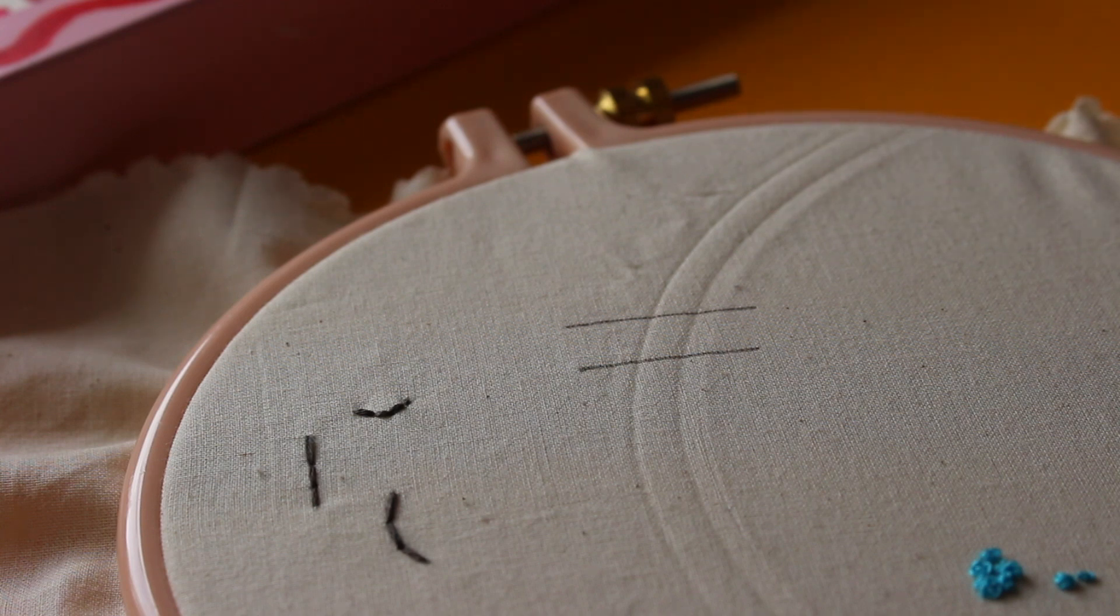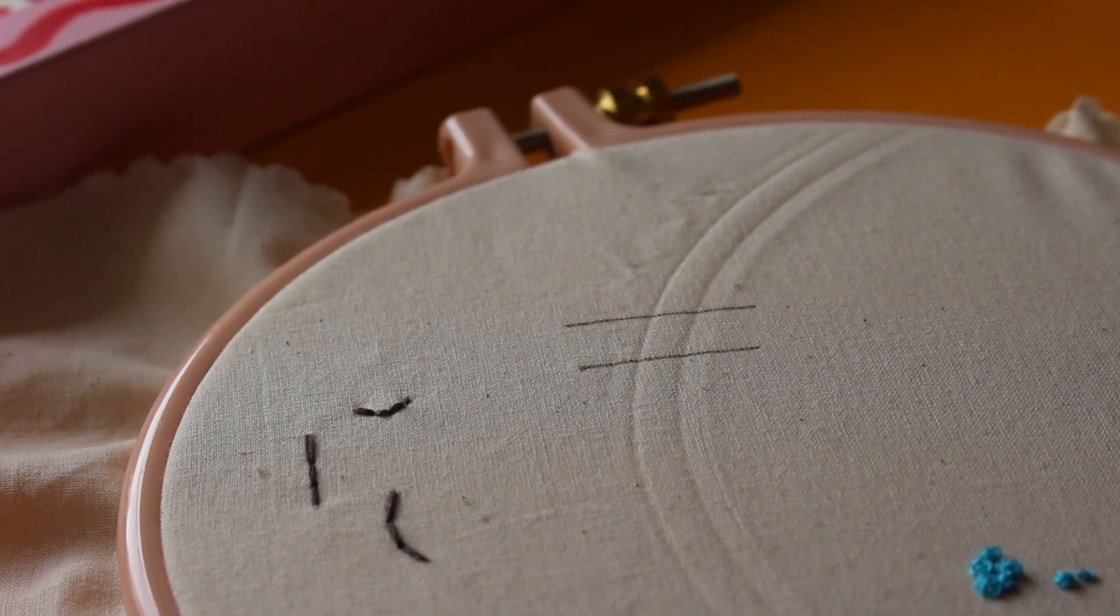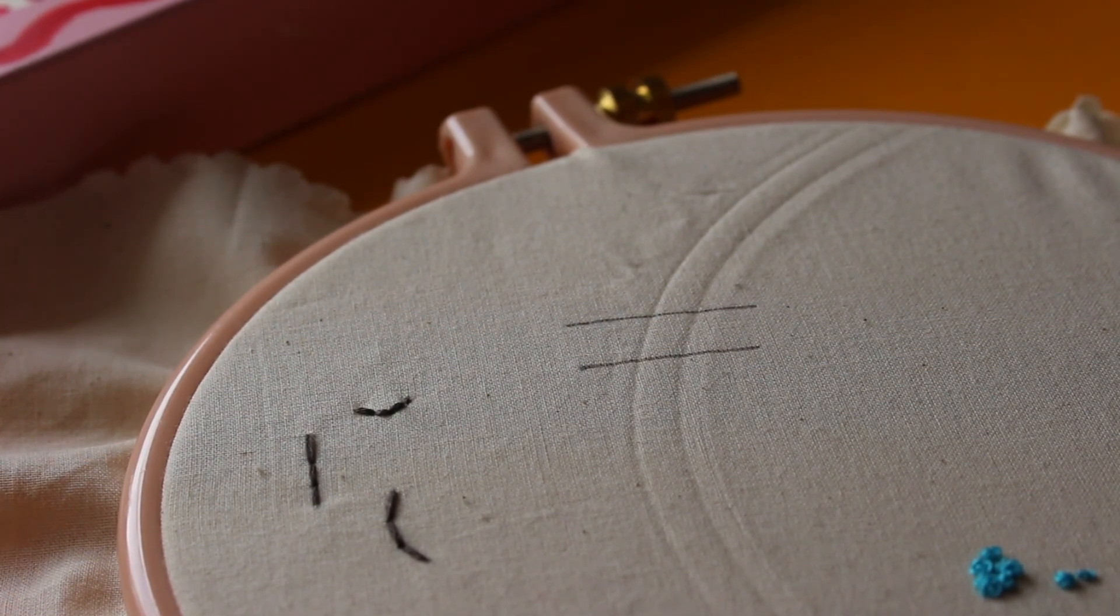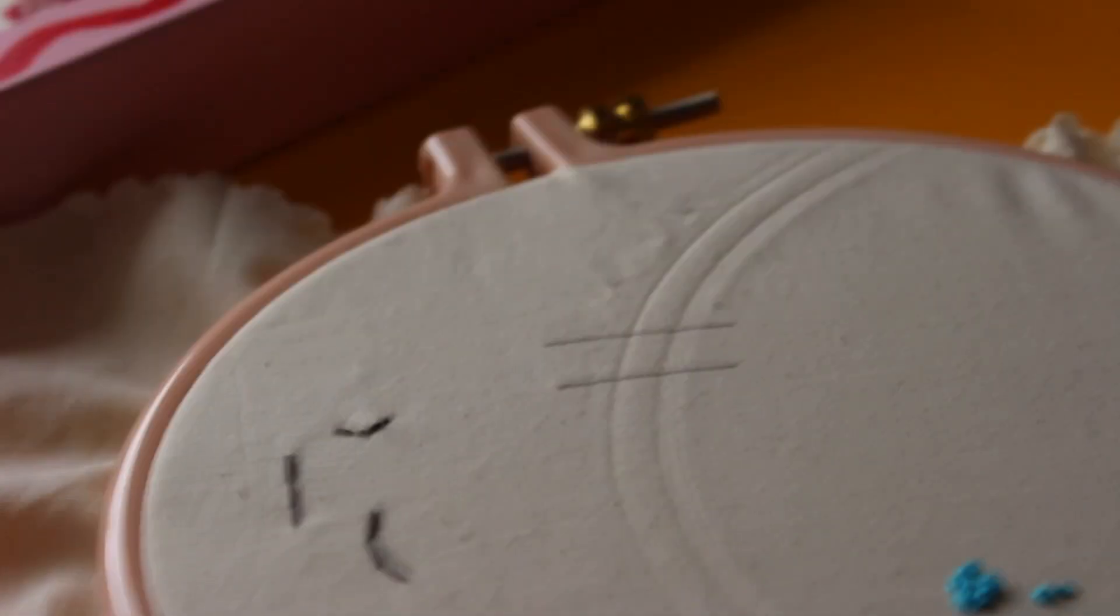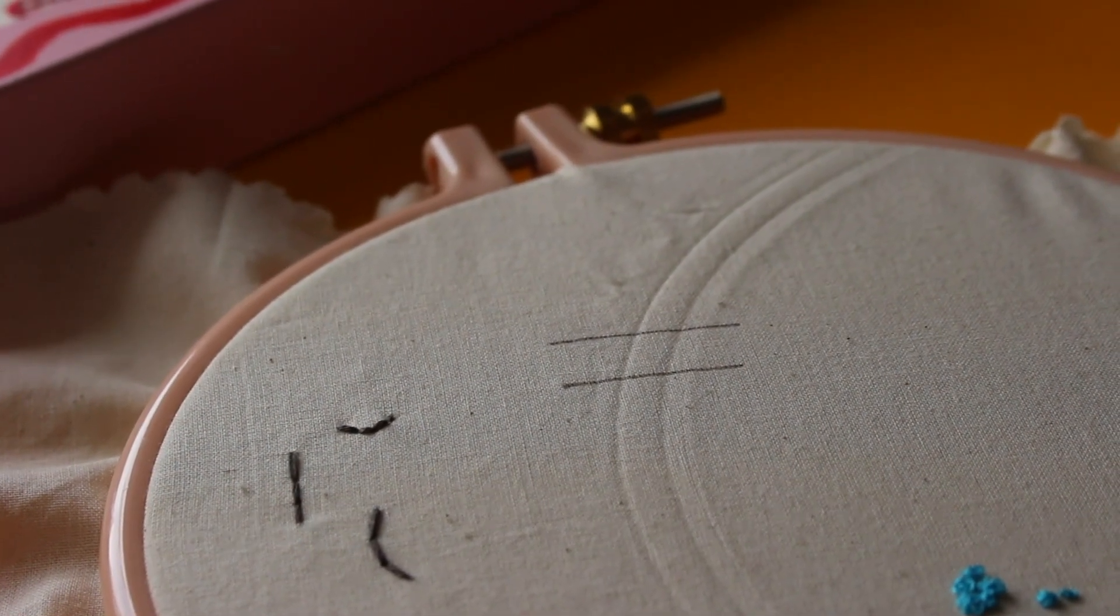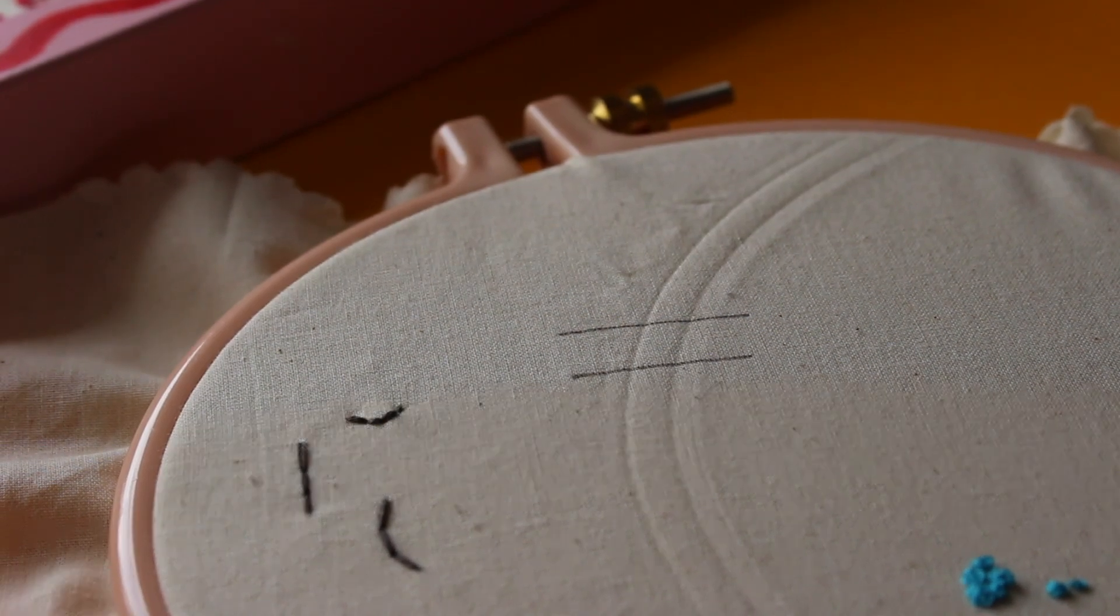The stem stitch is called a stem stitch because it does resemble sort of what a stem will look like, so it is a very nice stitch to use for any sort of plants or flowers that you're going to make.